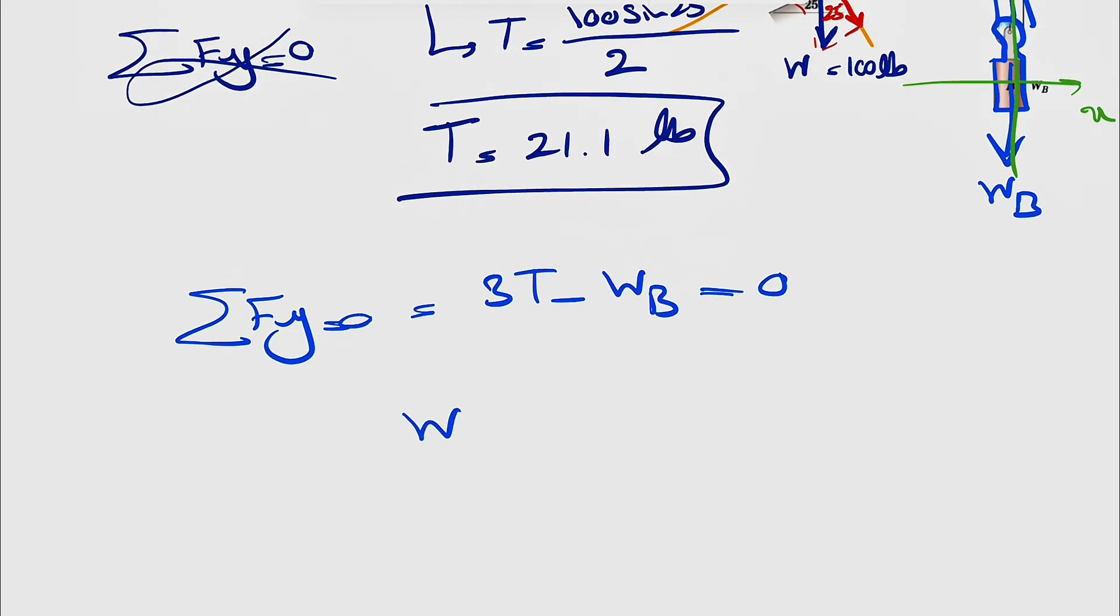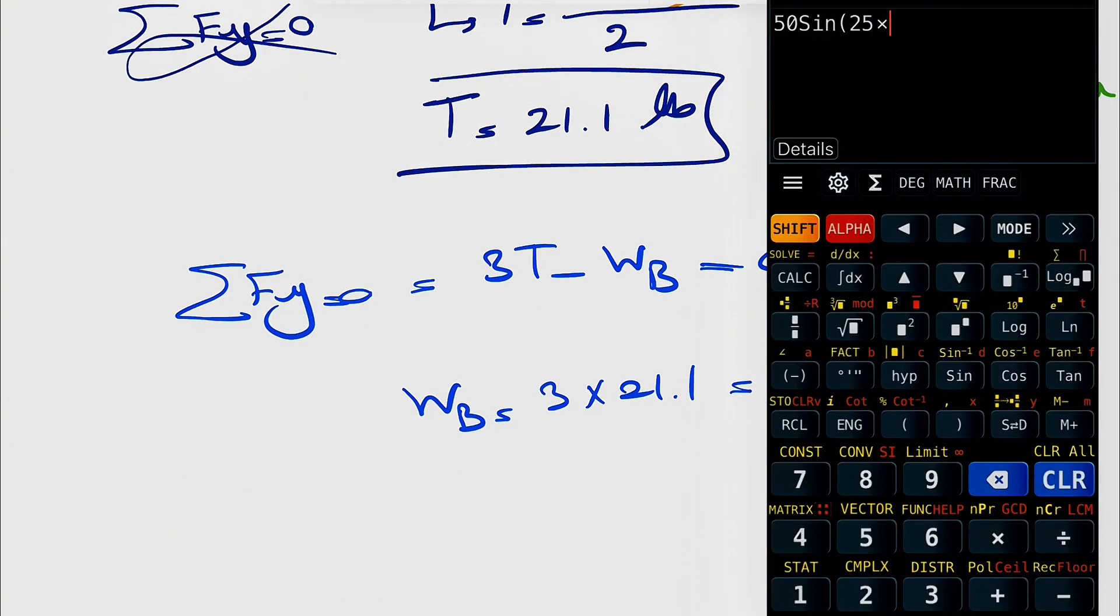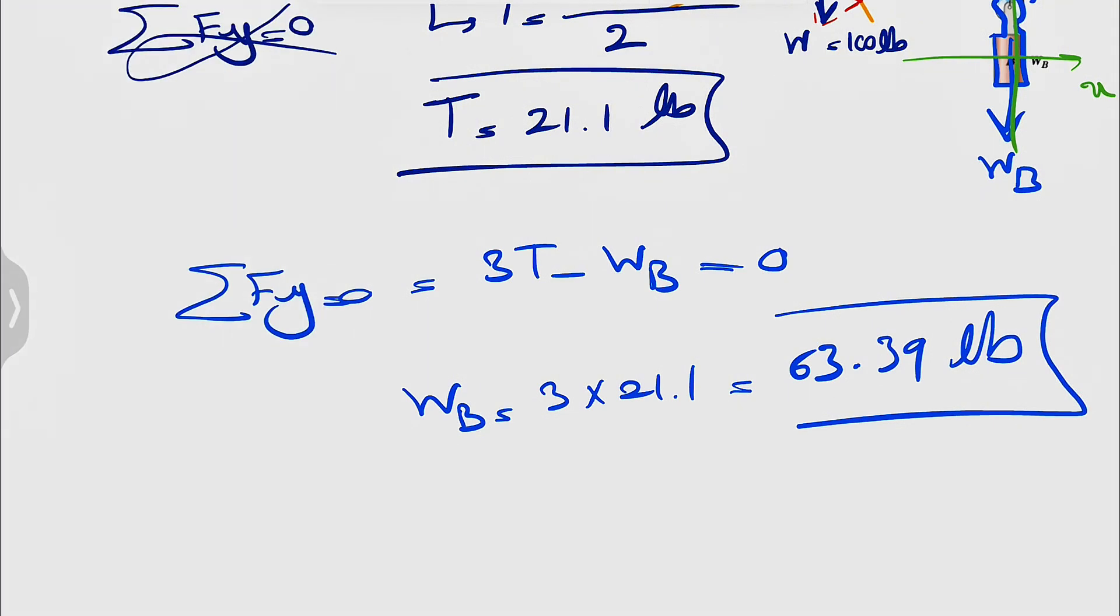And basically our W would be 3 times 21.1. So let's just multiply this by 3. That's going to give us 63.39 pounds and the final answer for this question.